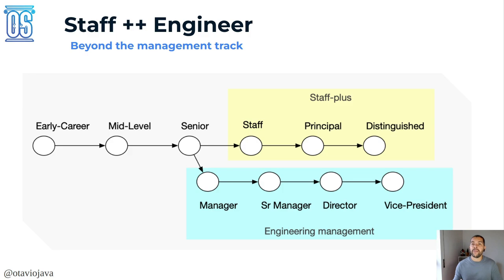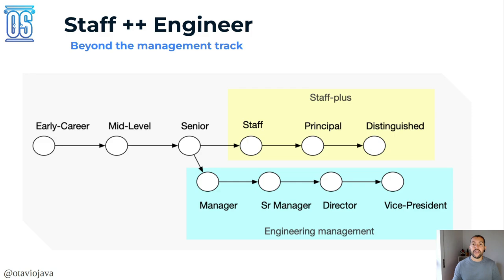Let's talk about the staff plus engineer. As the graph shows, it comes from Will Larson's book, which I'll mention later. It is a position after senior, for a person who wants to stay as an engineer. After senior, the next level is to become a staff engineer, then principal, and finally distinguished.